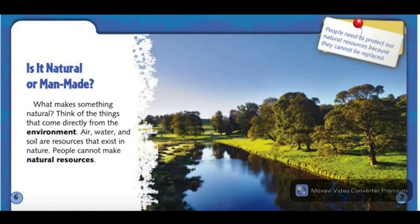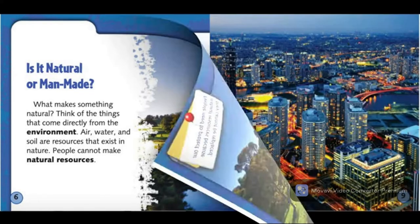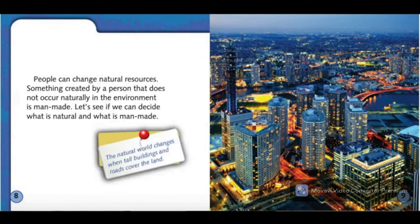What makes something natural? Think of the things that come directly from the environment. Air, water, and soil are resources that exist in nature. People cannot make natural resources. People can change natural resources. Something created by a person that does not occur naturally in the environment is man-made. Let's see if we can decide what is natural and what is man-made.